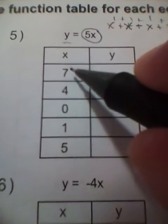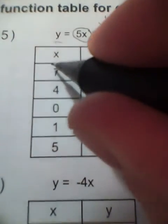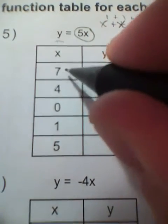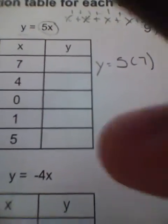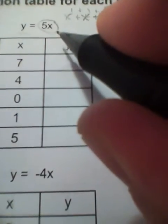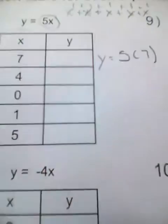Now, if I take a look here, this is nice because they tell me what x is every single time. All I'm doing is substituting the value that they give me, or that they assign x, into my function. So for the first one, I'm going to substitute the 7, replacing the variable x with the value of 7.